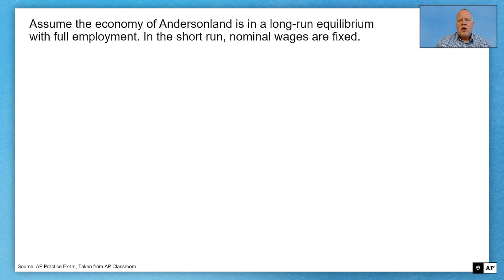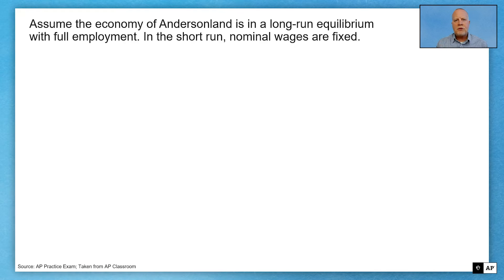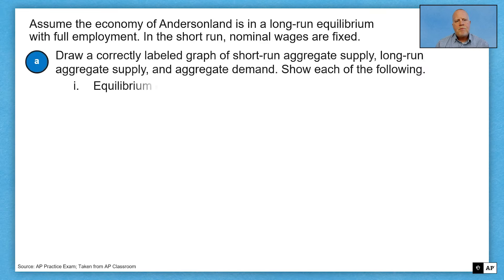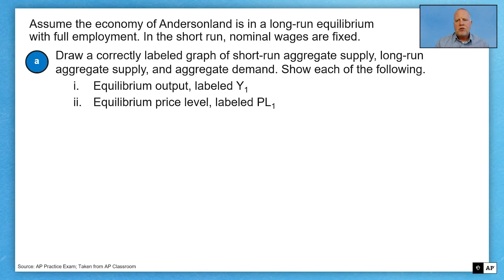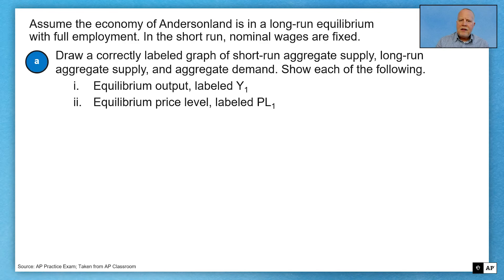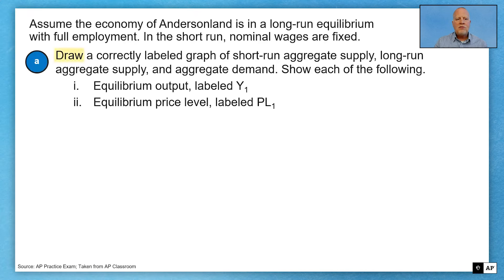First question. Assume the economy of Anderson Land is in long-run equilibrium with full employment. In the short run, nominal wages are fixed. Always read that first sentence carefully — pull something out. There's going to be something there that you need throughout the question. Part A: draw a correctly labeled graph of short-run aggregate supply, long-run aggregate supply, and aggregate demand, showing equilibrium output labeled Y1 and equilibrium price level labeled PL1. With FRQs, a lot of them follow the directions, and part of that is following verb prompts. Know your verbs — look for verbs. I'm going to highlight them whenever we come to them. So in this first part, they're telling me to draw something and show something. Follow those directions.